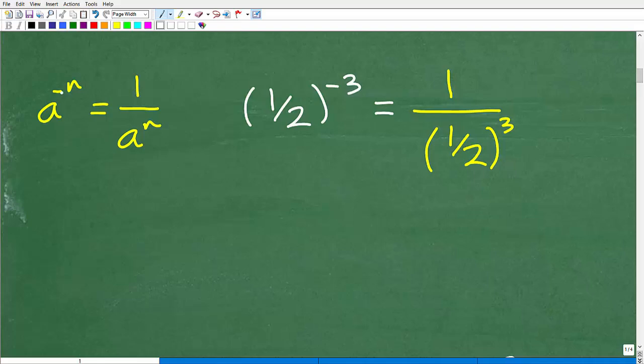All right, so here it is. a to the negative n is equal to 1 over a to the n. So a is the base. So I have a base to the negative power. I can write this as 1 over that same base, but the power becomes positive. So let's just follow the rule. This would be like my a, and this is like my negative n. So if I put this over 1, 1 over, I'm going to write the same power. But notice the exponent goes from negative to positive. Just right here, negative to positive. So just follow the rule. So here is the rule in action, negative exponent.